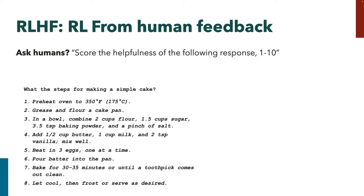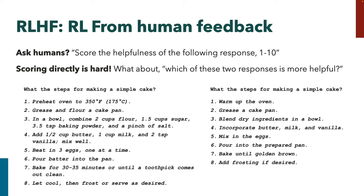Maybe instead of giving rewards directly, it's a lot easier to say which of two responses is more helpful. We're going to see much higher agreement a lot of the time when we ask for comparisons, and more people can make that judgment because it's much easier than giving a number. It's easier to scale annotation this way — much easier to put two responses in front of a person and say 'which do you like better' than to say 'write me a good demonstration' or 'come up with a number that captures how good this is.'